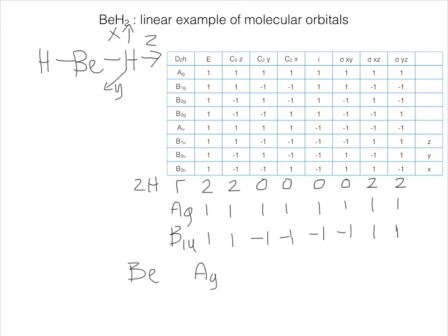So we write those down here, so B1u, B2u, and B3u. Now on the next page, I will show how these can combine in the molecular orbital diagram.